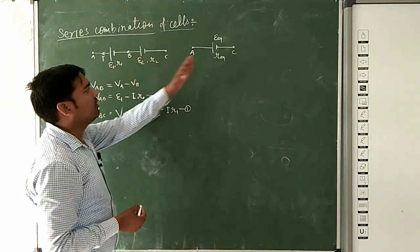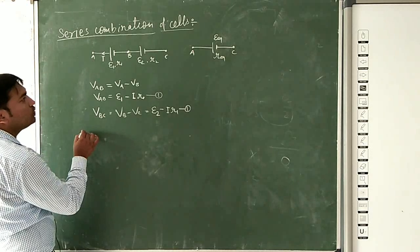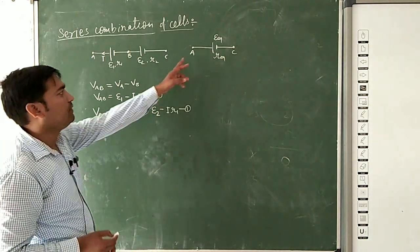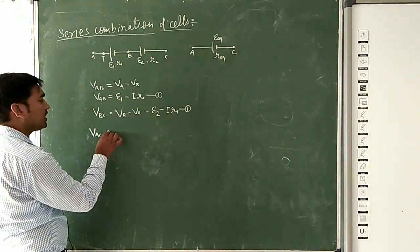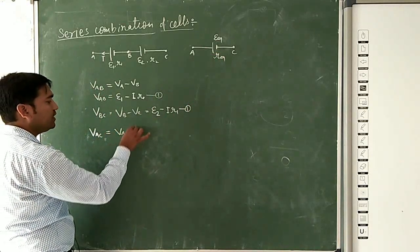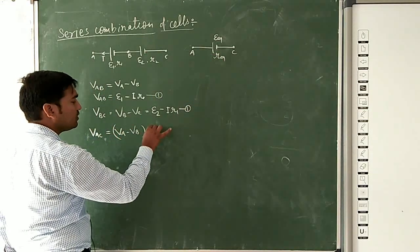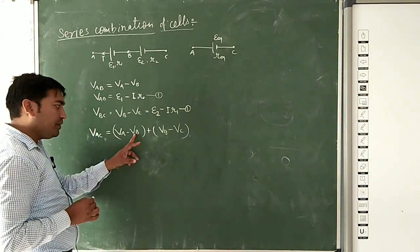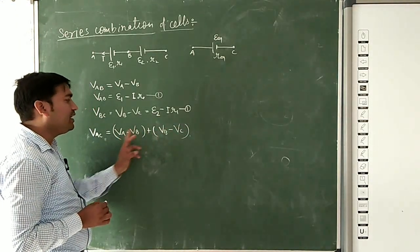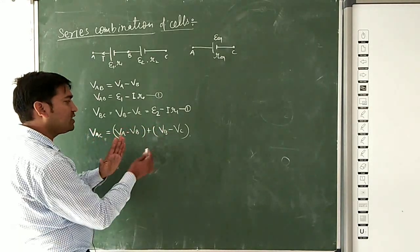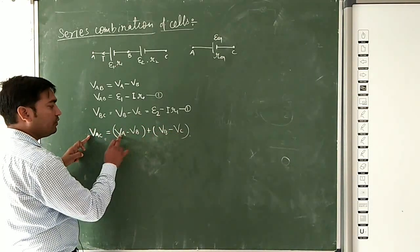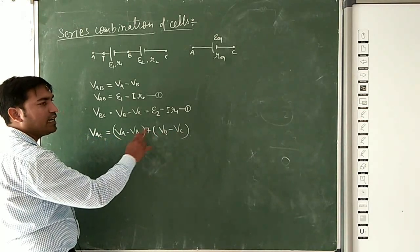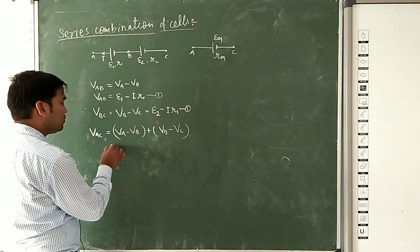Now we have taken the equivalent of both cells. According to this, the potential difference across AC, which we can write as VAC, equals (VA minus VB) plus (VB minus VC). Notice that VB minus and VB plus cancel out, leaving VA minus VC, so VAC equals VA minus VC.